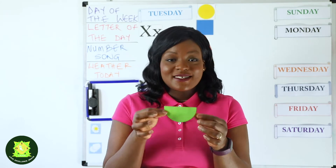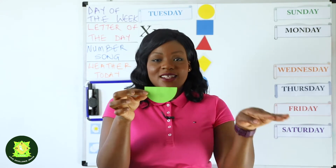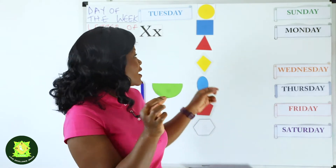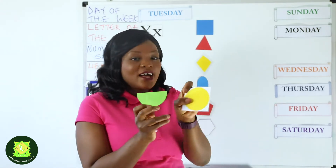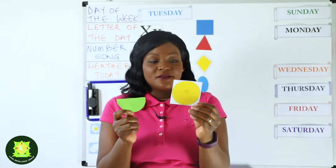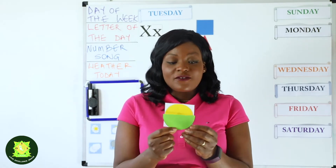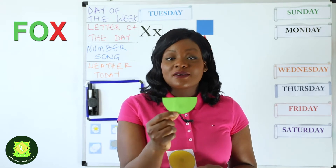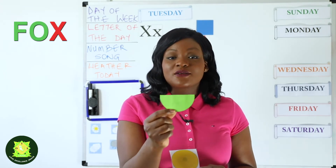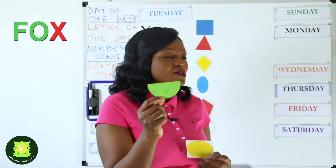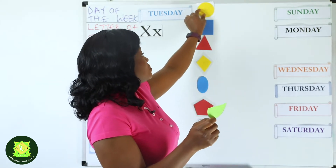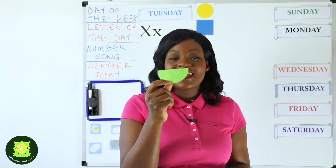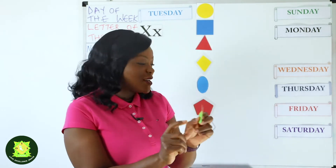Let's go to the next shape. This looks like half of a circle, doesn't it? I have a full circle here and then this shape that looks like half of a circle — it is called a semicircle. So this is a semicircle. What did I say this is again? This is a semicircle. Well done and good job everyone.